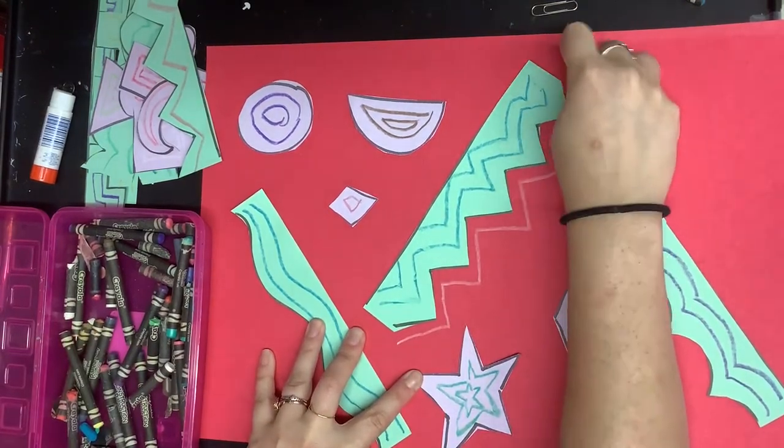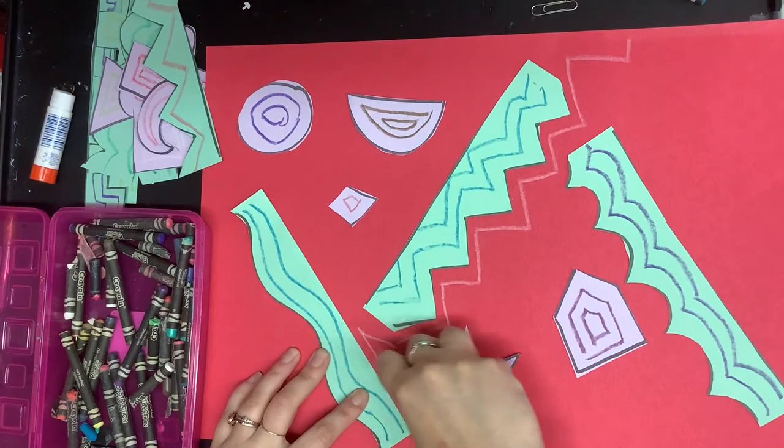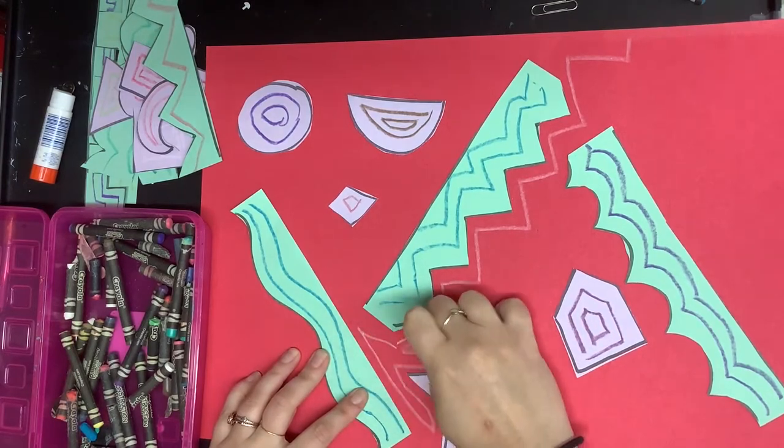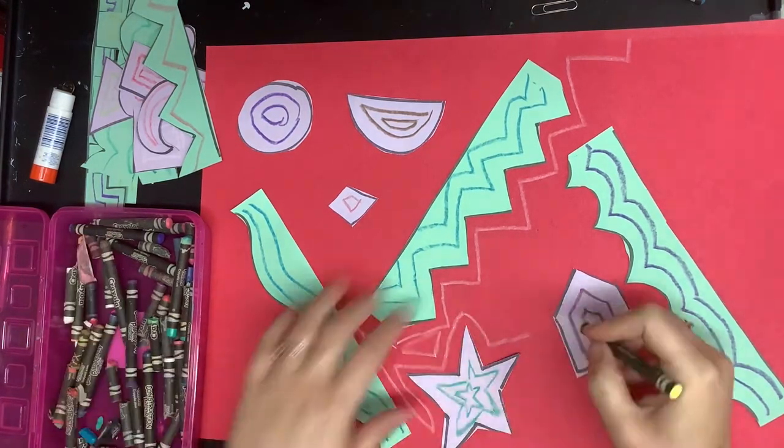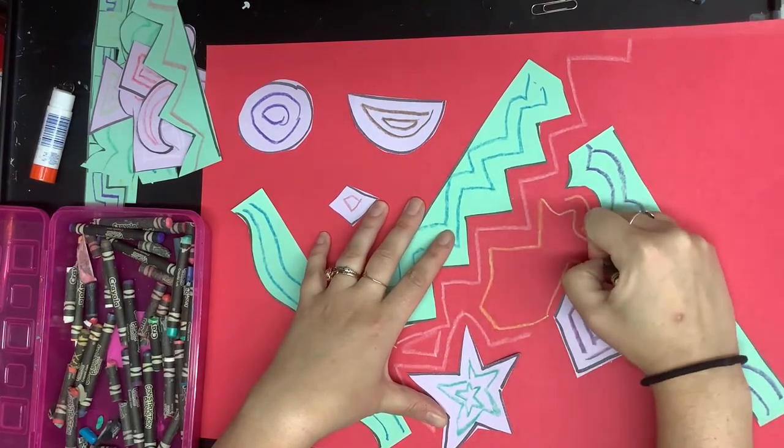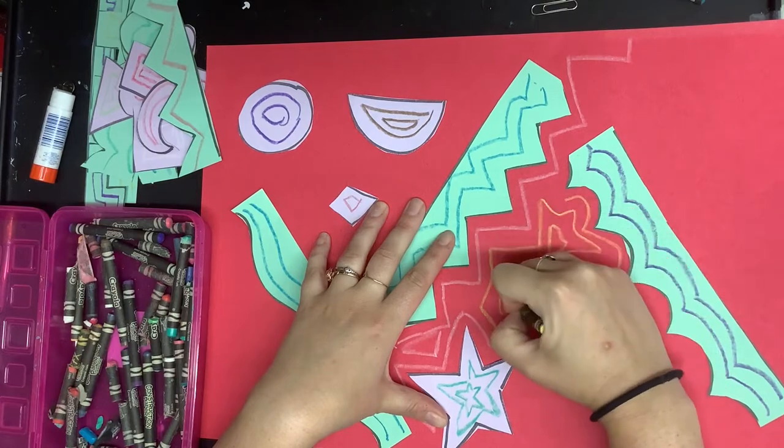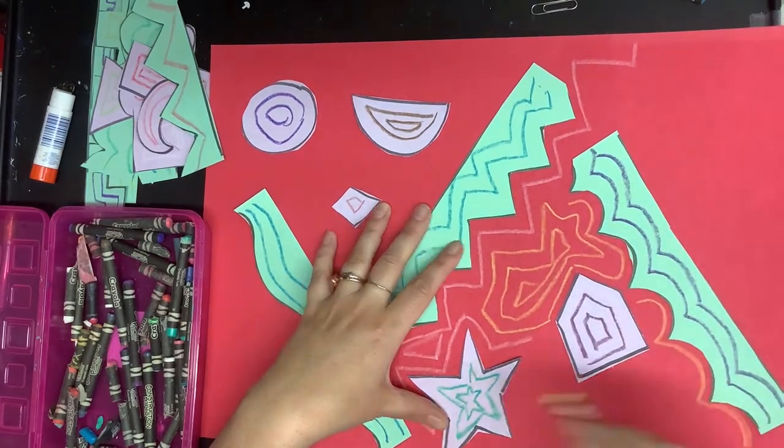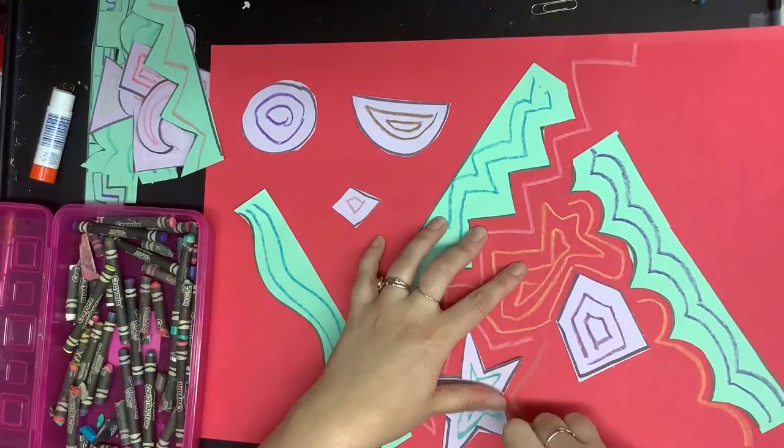And once I get everything glued down then I'm going to start going around all of my pieces and tracing with lines using those magic crayons and you can see that this white and this yellow are showing up really super good on the red paper because it's a magic crayon so make sure you're using the magic crayons.